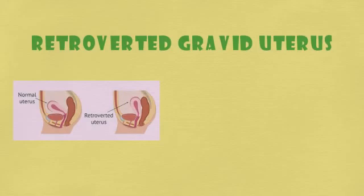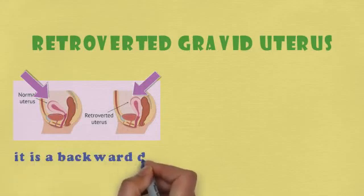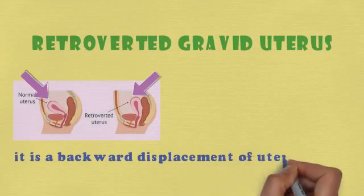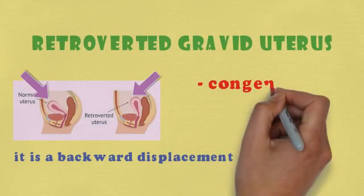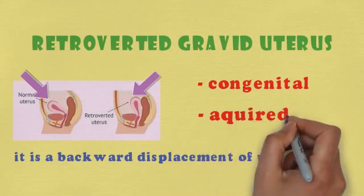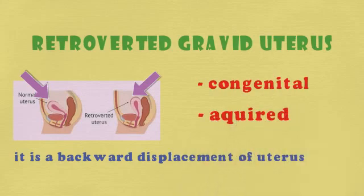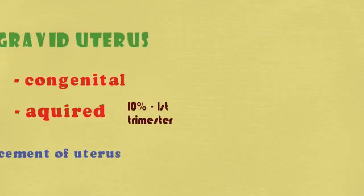What is retroverted gravid uterus? It is a backward displacement of the uterus. Just look at those pictures of normal and abnormal — that's retroverted. Here the uterus is displaced backward. It can be congenital, that means from birth itself, or acquired during pregnancy or any other reason. The incidence is 10% in the first trimester.